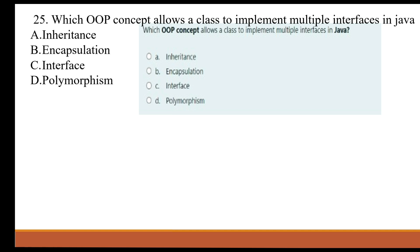Which OOP concept allows a class to implement multiple interfaces in Java? A. Inheritance. B. Encapsulation. C. Interface. D. Polymorphism.